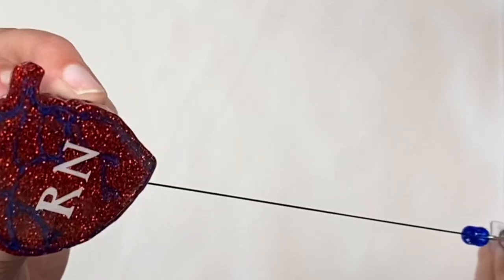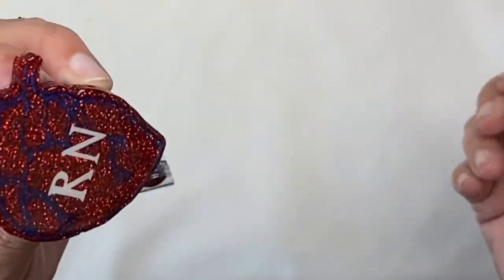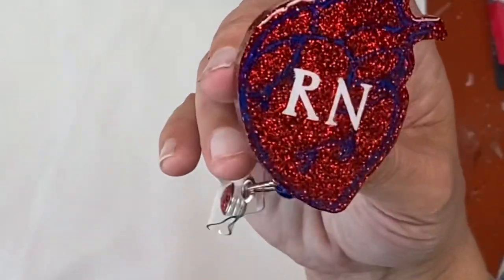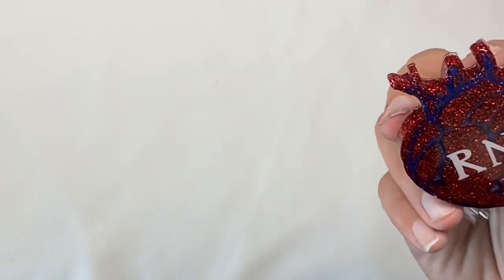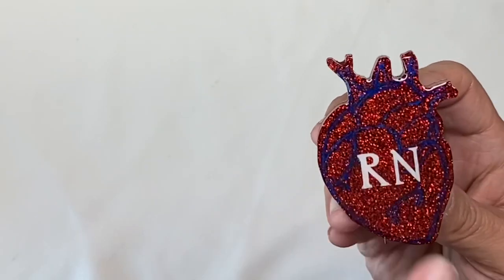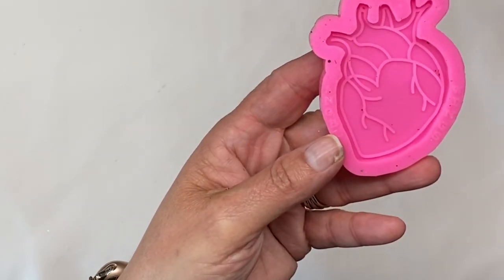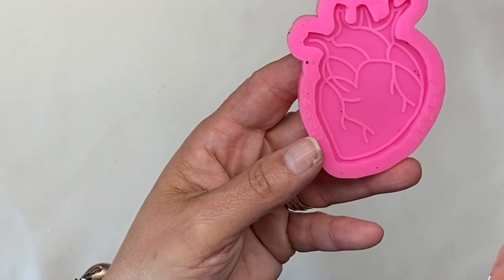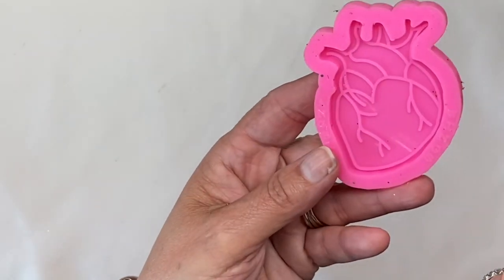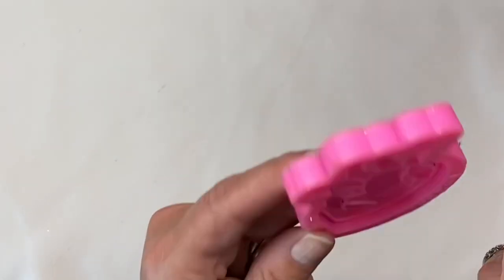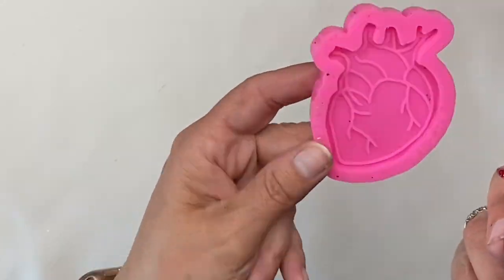And today we are making a really cute badge reel. So I like this a lot. It is, of course, a heart and I used a mold on this. This is what the mold looks like. I got it from AliExpress. You can get them on Amazon. I've seen them there. If I can find it easily, I'll attach it.